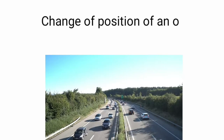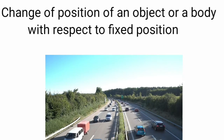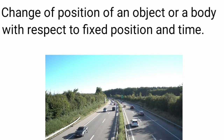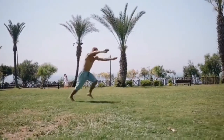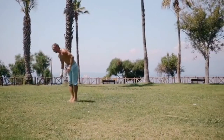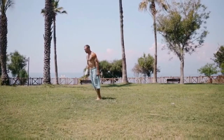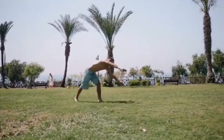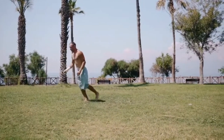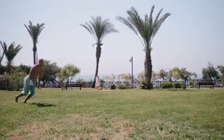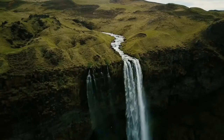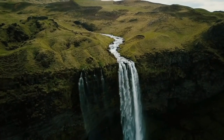Motion can be defined as change in position of an object or change in position of a body with respect to a fixed position and time. For example, in this video, we can see a person is actually present at a particular position — the original position. Let us consider this position as A. Now after one minute, he is at position B. So we can say that the person was in motion because he moved from fixed position A to another new position B within a particular time. Another example of motion is flowing water.